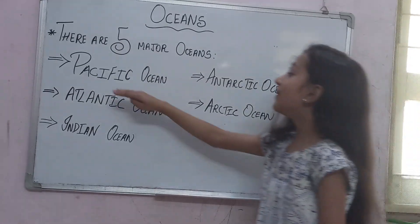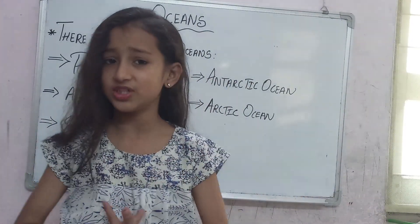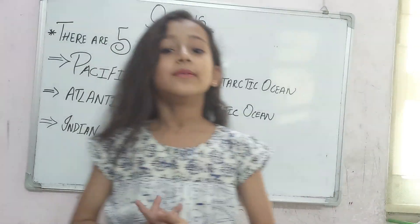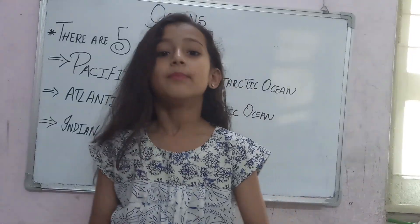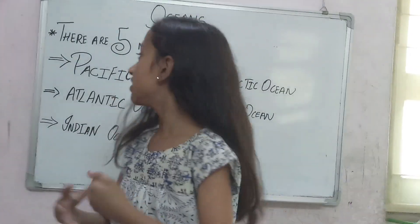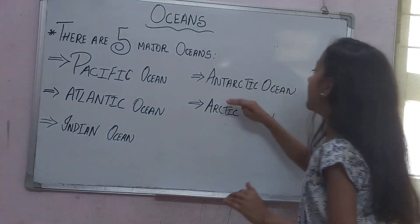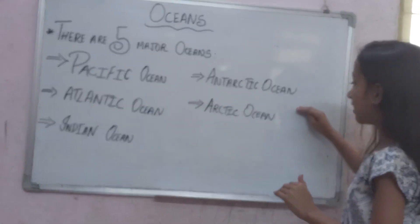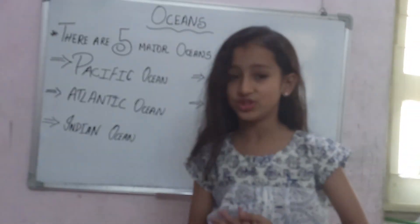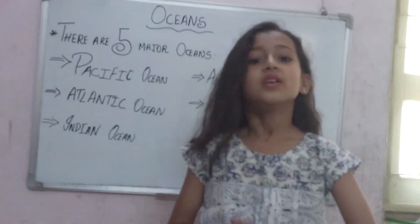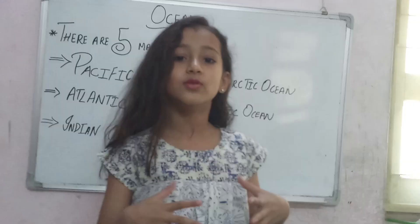The Pacific Ocean is the largest ocean, and its deepest point, the Mariana Trench, is located there. The Antarctic Ocean is sometimes known as the Southern Ocean. So let us go to the uses of oceans.